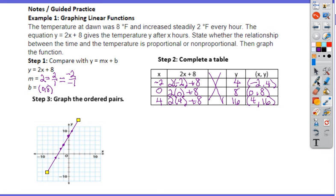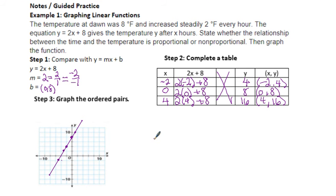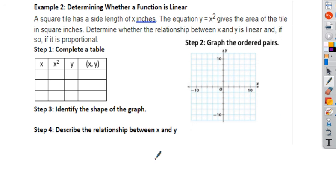The last thing is: is this proportional or non-proportional? Remember, proportional relationships are straight but they go through the origin. This does not go through the origin, so we would say this is non-proportional. It is linear, it is a function, but it is not proportional.